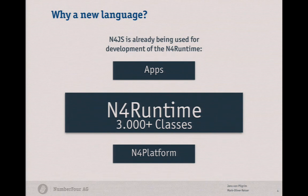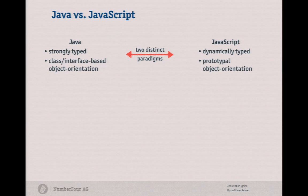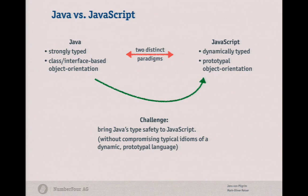JavaScript has no types, but Java has. The idea is to compare Java and JavaScript. In Java, you have a strongly typed system and class or interface-based inheritance and object orientation. In JavaScript, you have dynamic types — there's no type checking at compile time — and you have prototypal object orientation. Our idea was to bring the type system of Java and its type safety to JavaScript as our primary focus, while keeping all the typical JavaScript idioms in N4JS.